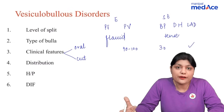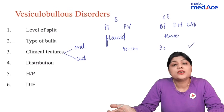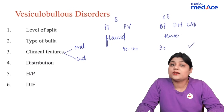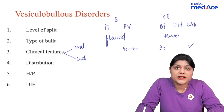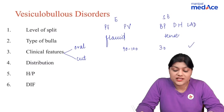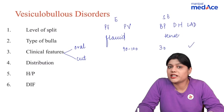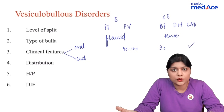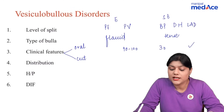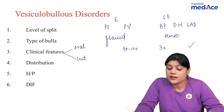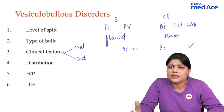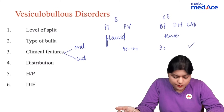In bullous pemphigoid there is urticaria along with tense bulla. The distribution of pemphigus foliaceus is in seborrheic areas and may also end up in erythroderma. Pemphigus vulgaris and bullous pemphigoid can be present over the trunk, upper and lower limbs, mostly in the flexures. Whereas dermatitis herpetiformis is mostly seen in extensors, and linear IgA disease is again over extensors and over the face and buttocks.